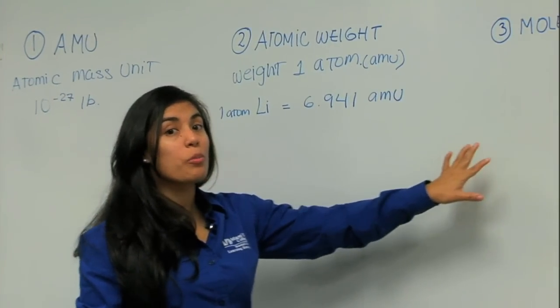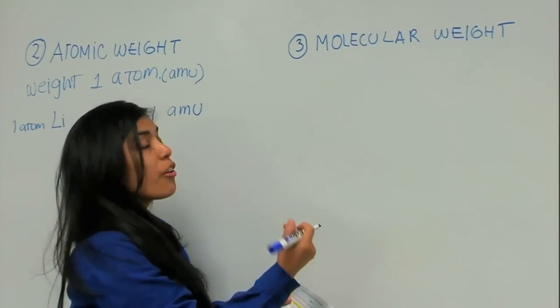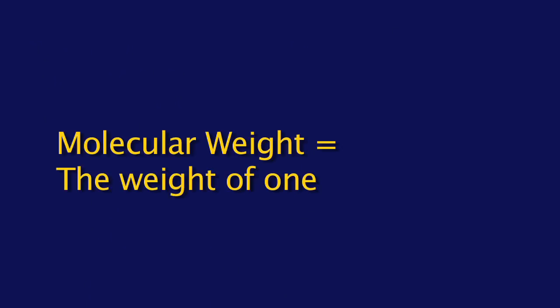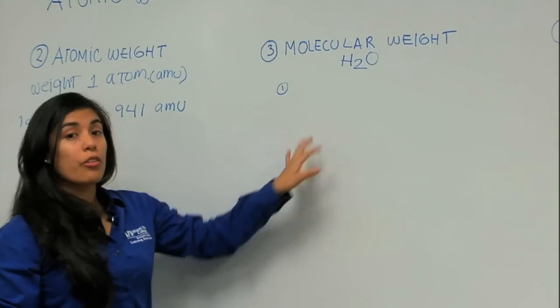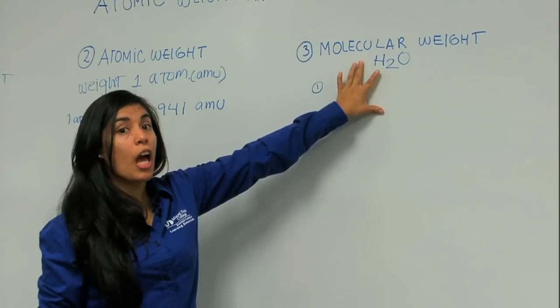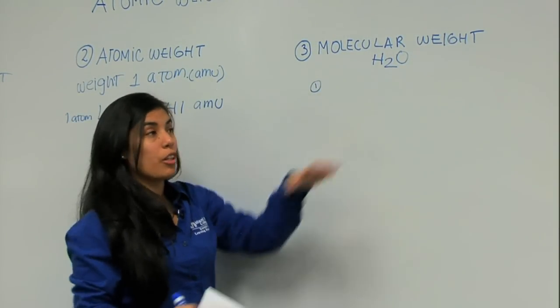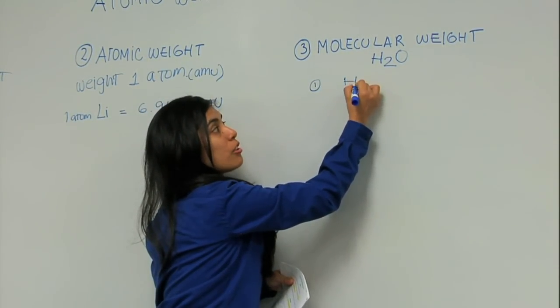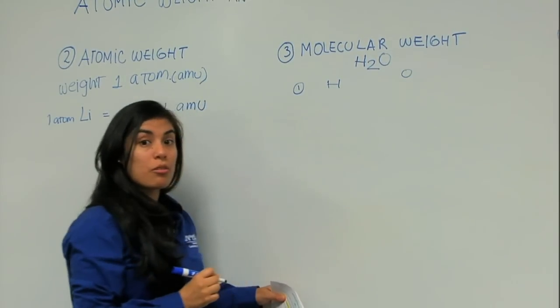Now, what is molecular weight? Well, there are three things that I need to know. First, the molecular weight by definition is the weight of one molecule. In this case, let's suppose it's water. First, to calculate this molecular weight, I need to know what atoms are here. I have hydrogen and I have oxygen.